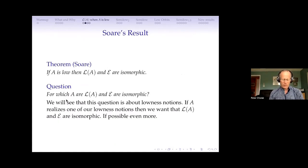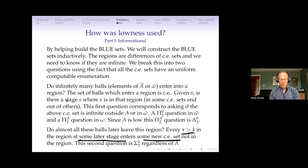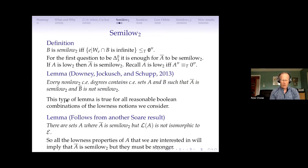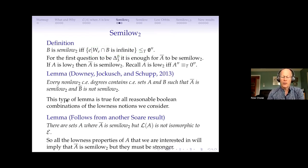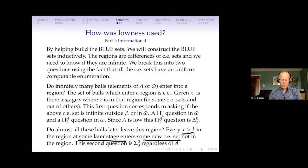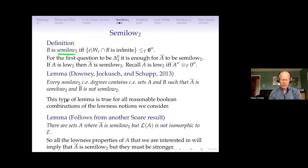We've been discussing Bob Soare's proof and trying to see where lowness was used. A set B is semi-low 2 if basically asking whether the intersection of W_e with B is infinite is Δ⁰₂ below zero'. The point is that's all I needed to do with lowness — that's all I really needed: basically semi-low 2.